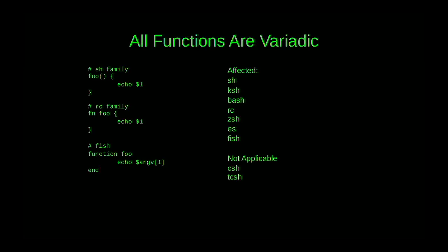All functions accept a variable number of arguments. Here's a fairly useless function defined in three syntaxes that just takes the first argument and prints it — but you can call this function with any number of arguments, and the rest just get thrown away. This isn't applicable to the C shell line because they don't have functions.